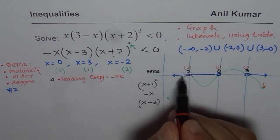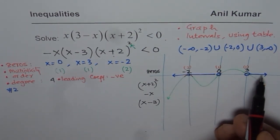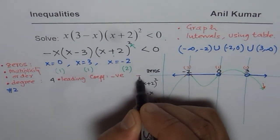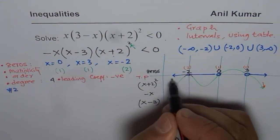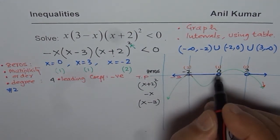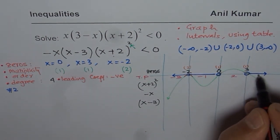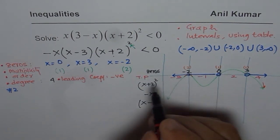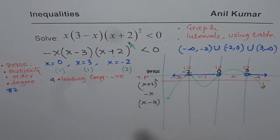These zeros divide the number line into four regions. Test points are: minus 3 for the interval minus infinity to minus 2; minus 1 for minus 2 to 0; 2 for 0 to 3; and 4 for 3 to infinity. We will test each factor's sign at these points.